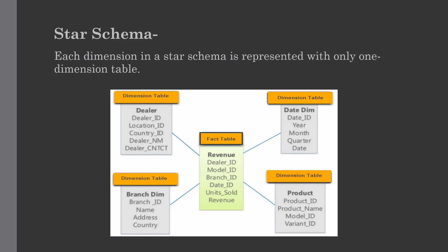In the star schema, the fact table is at the center and contains keys to each of the four dimensions. The date dimension uses a date ID, the product dimension uses a model ID, the branch dimension uses a branch ID, and the dealer dimension uses a dealer ID as a foreign key — present as a primary key in the revenue fact table. The fact table also contains attributes such as units sold and revenue. Each dimension has only one dimension table holding a set of attributes — for example, the product dimension table contains product ID, product name, model ID, and variant ID. This constraint may cause data redundancy.